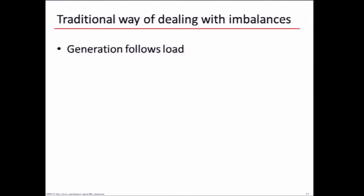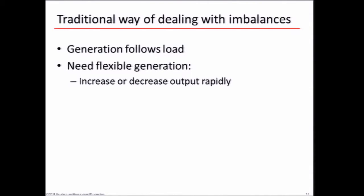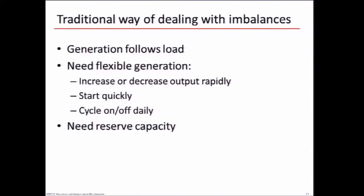The traditional way to deal with imbalances was that generation would follow the load, meaning we needed flexible generation that could increase or decrease output rapidly to deal with these imbalances. Power plants had to be able to start quickly, and in some cases we cycled them on and off on a daily basis. We also needed reserve capacity to deal with unpredictable things like outages or unanticipated changes in demand.